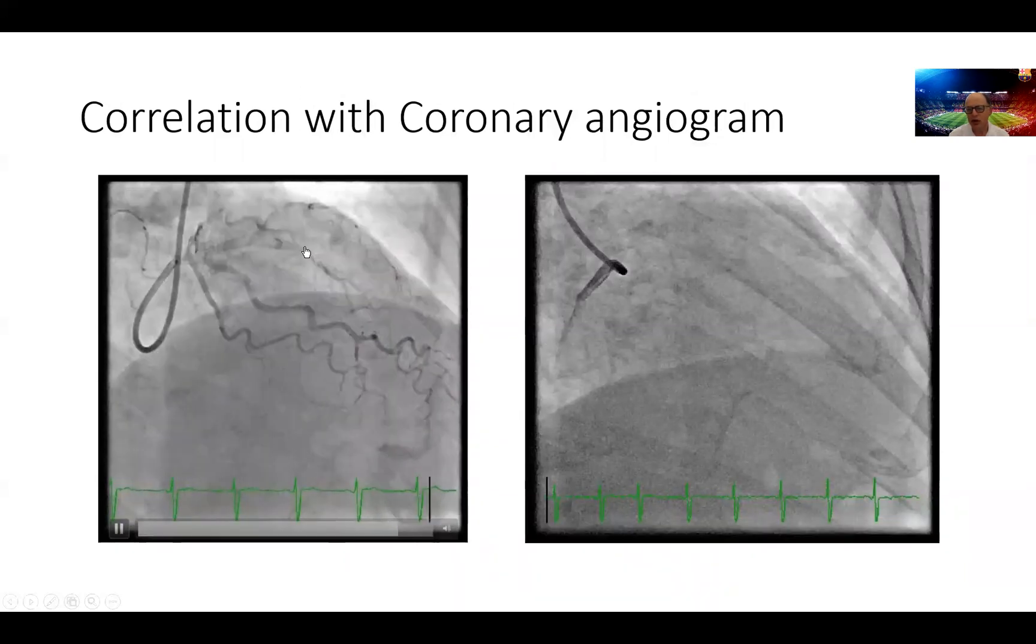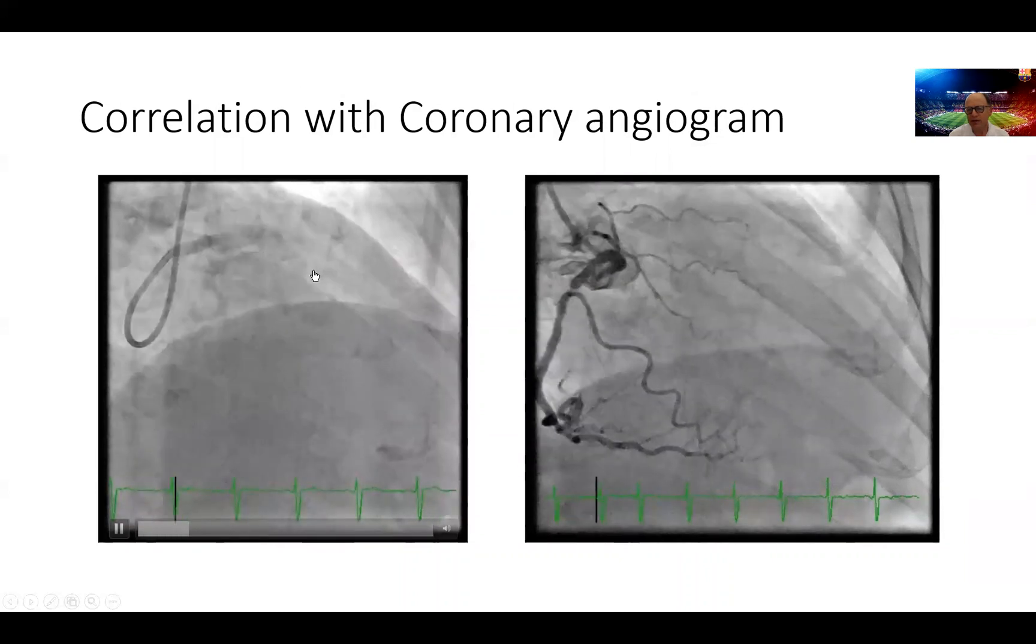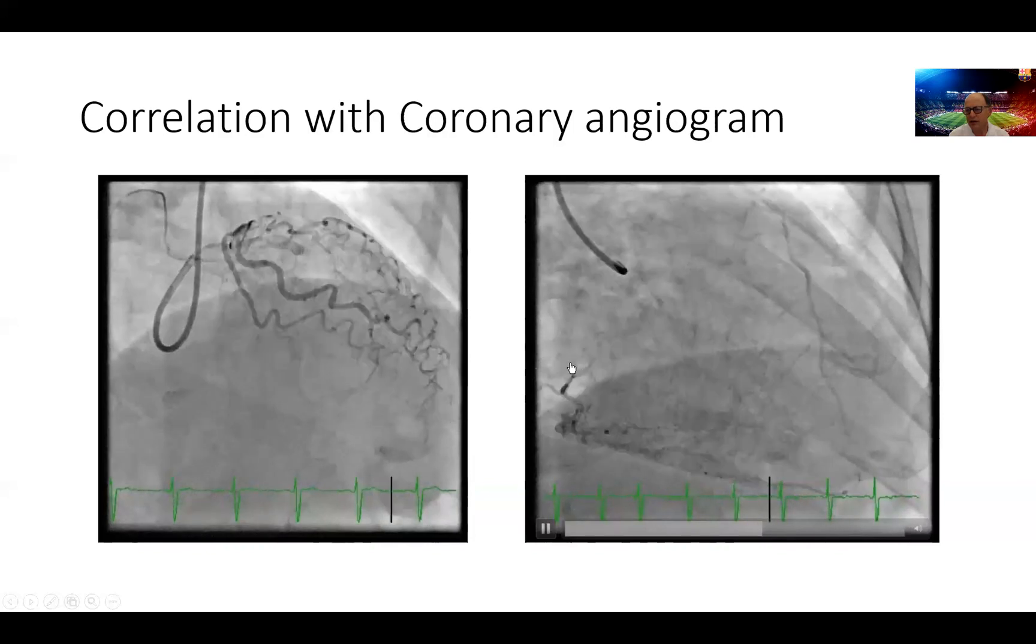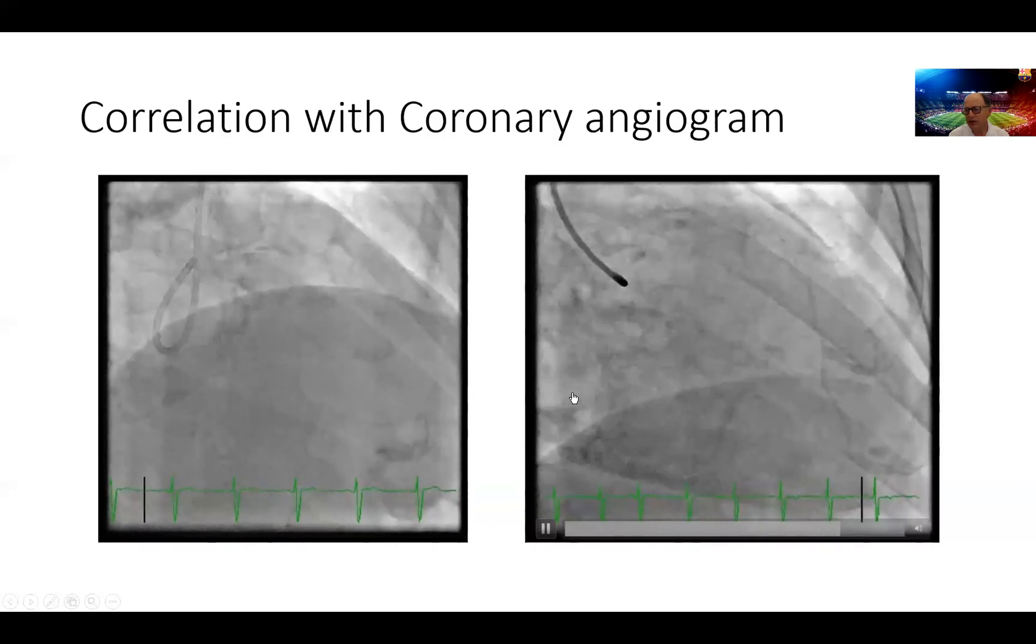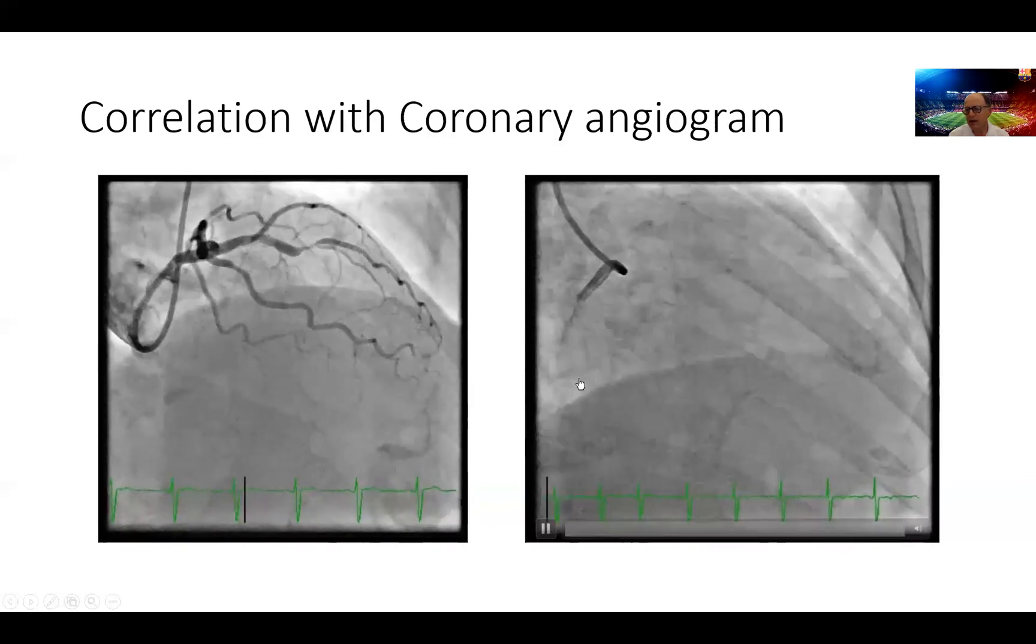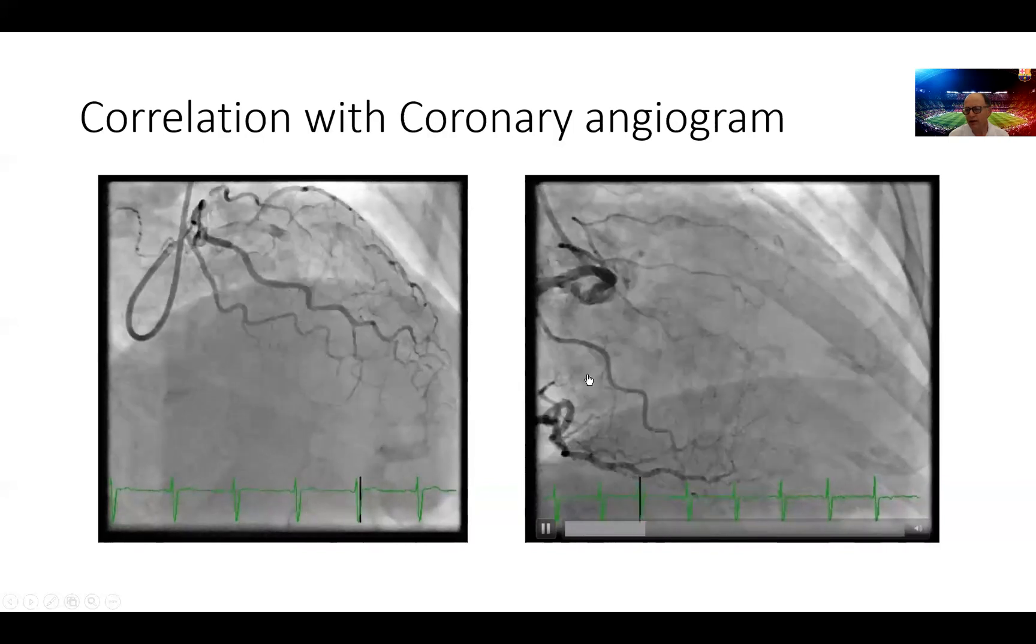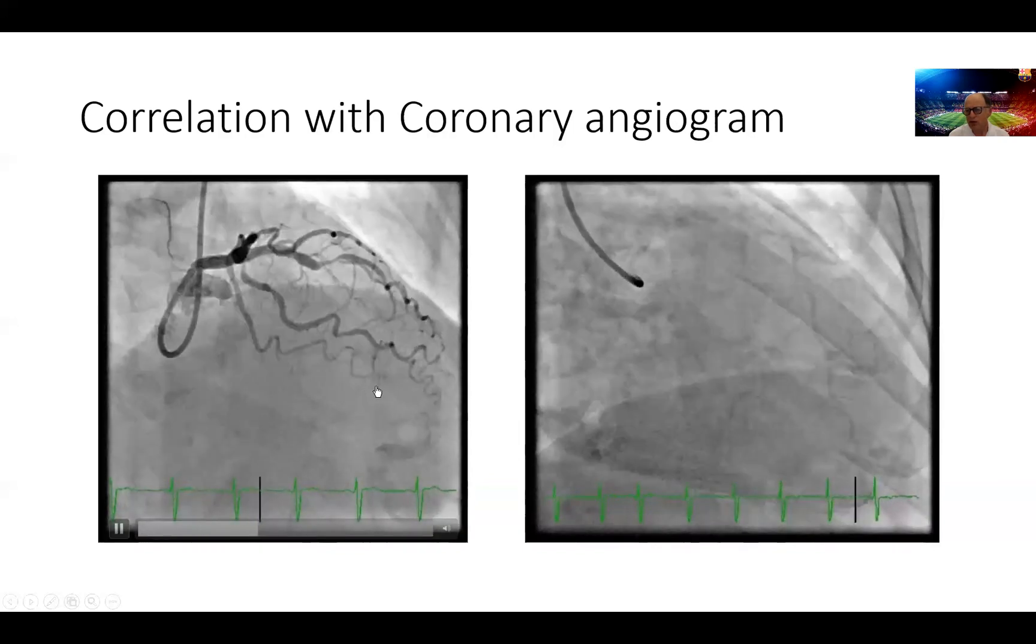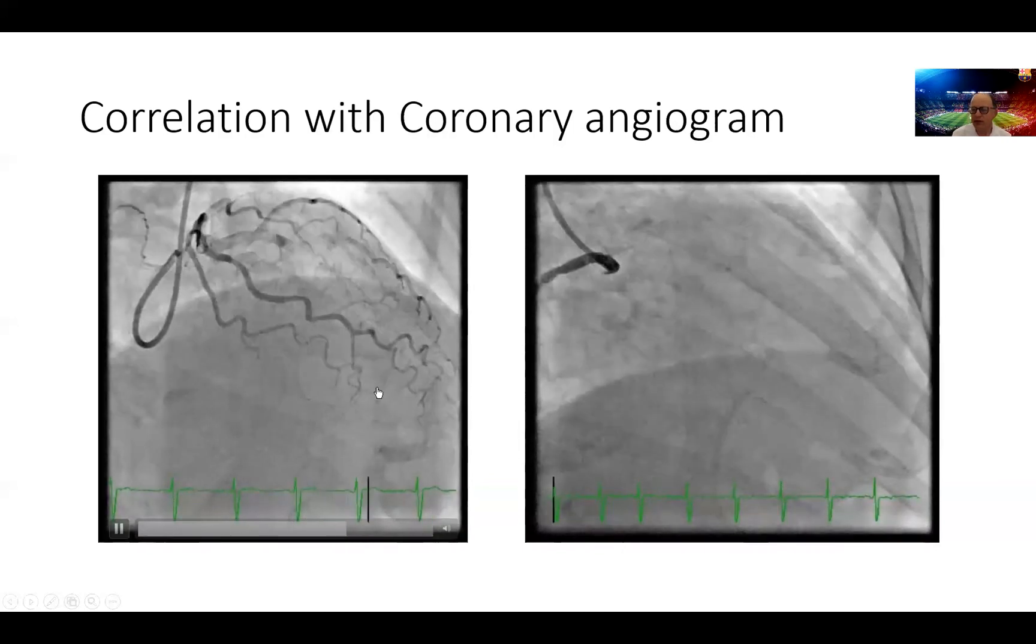That's the cardiac cath on this patient showing a significant severe lesion in the left anterior descending artery here, as well as another significant severe lesion in the right coronary artery right here.